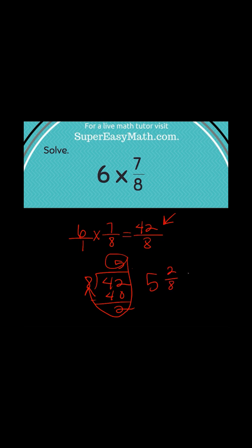So it's five two eighths, and then you want to simplify the fraction part, and so it becomes five and one fourth, and that's your answer.